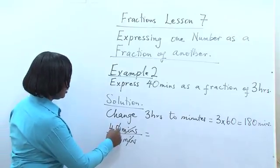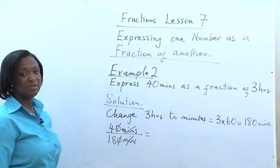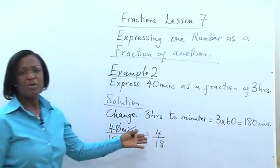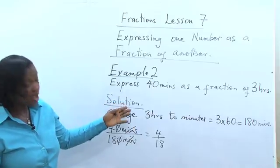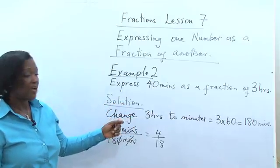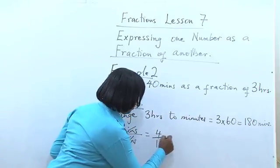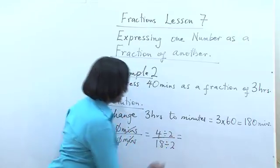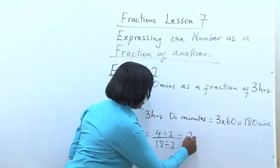The zeros will cancel out. And for the first step, we have 4 over 18. Both of them are even numbers, so we can divide both by 2. So 4 divided by 2 gives us a 2.